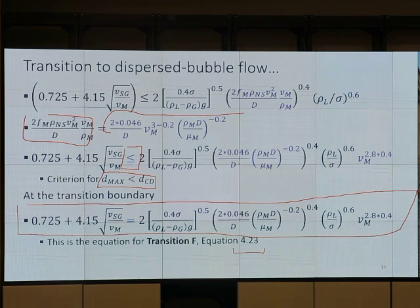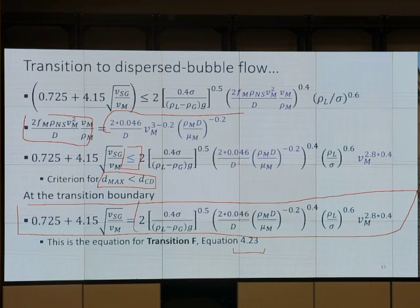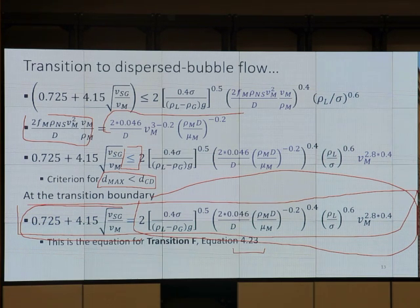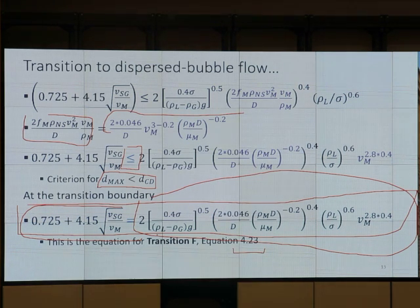If you have just an equal sign, you get just at the boundary. But in the text, if you put the right-hand side equation into your calculator and you put the left-hand side equation in your calculator, and you get left-hand side is more than right-hand side — you cannot tell what kind of flow pattern it is. You cannot tell because that equation has an equal sign.